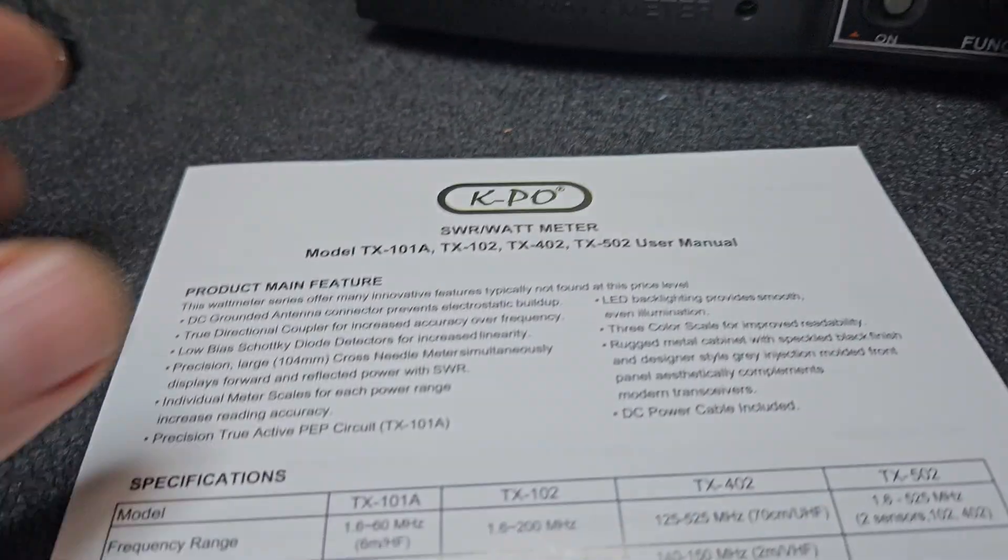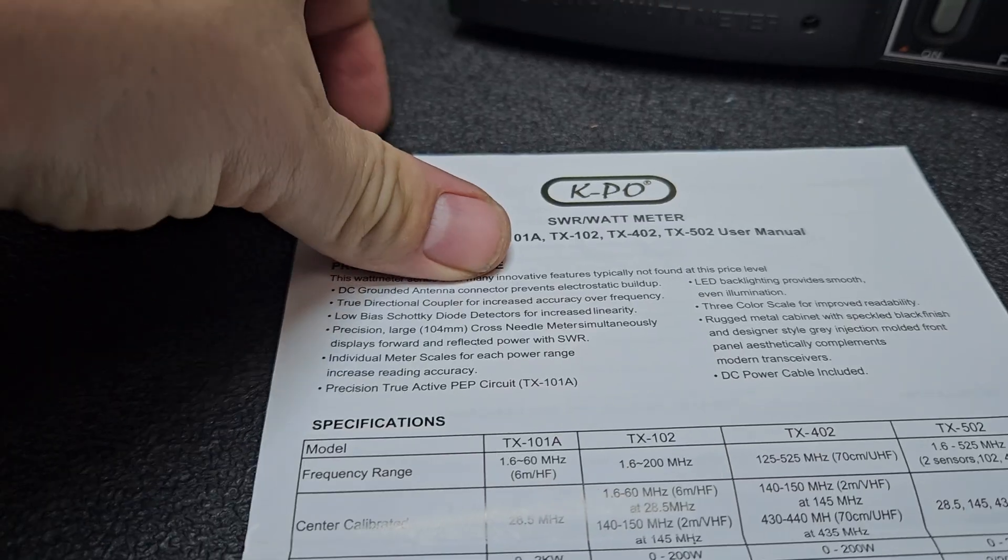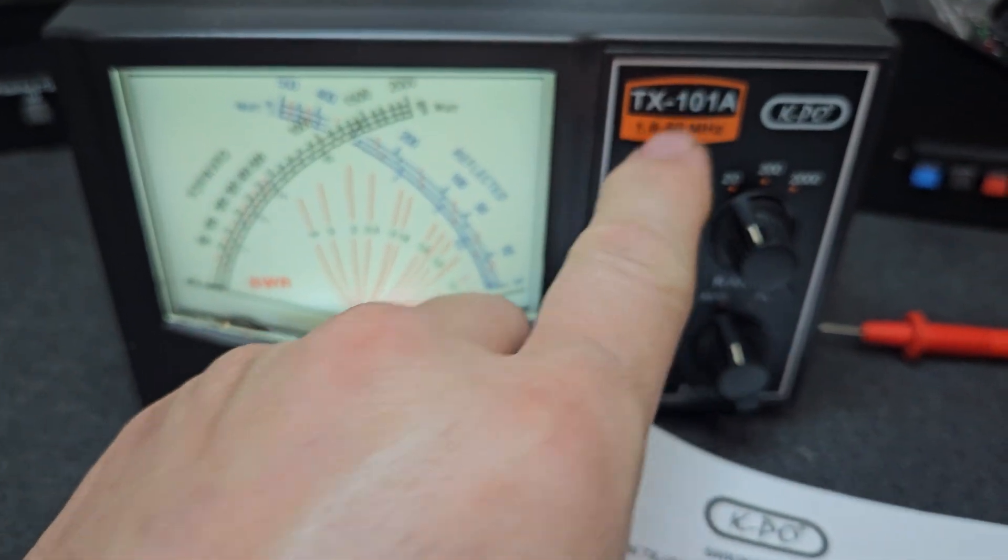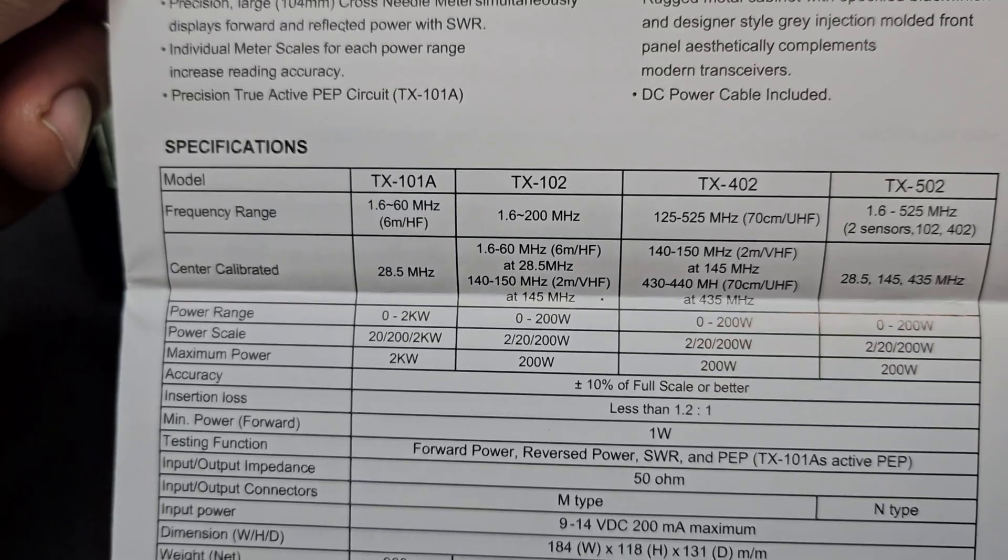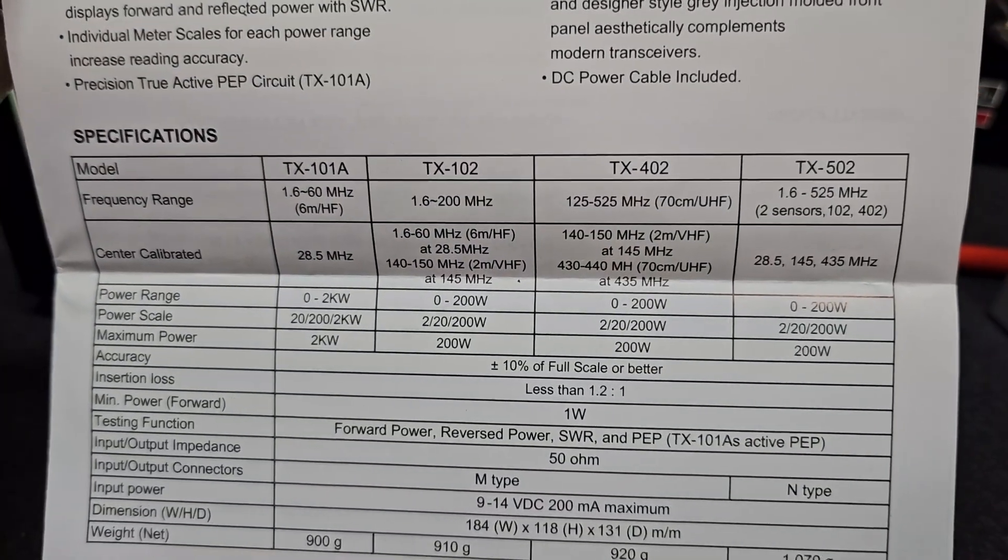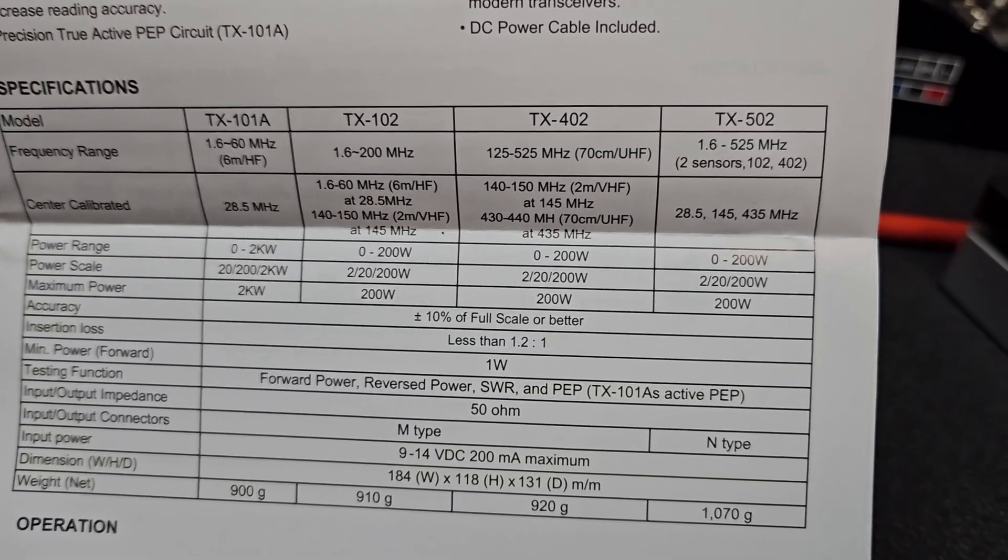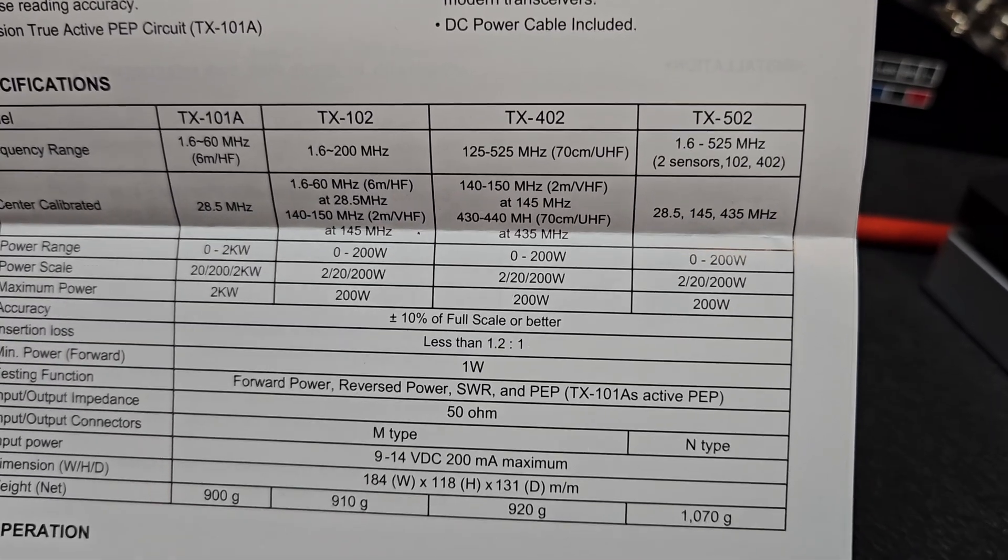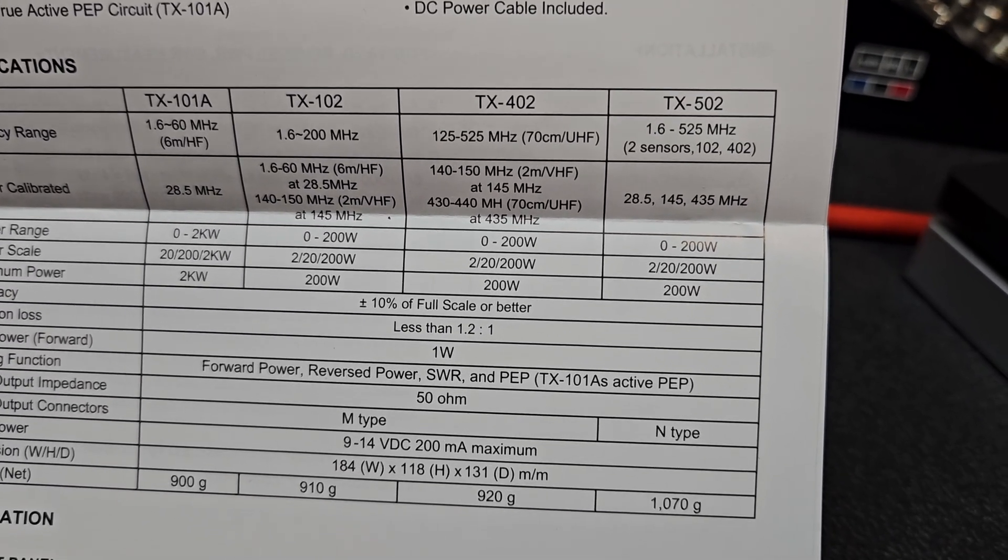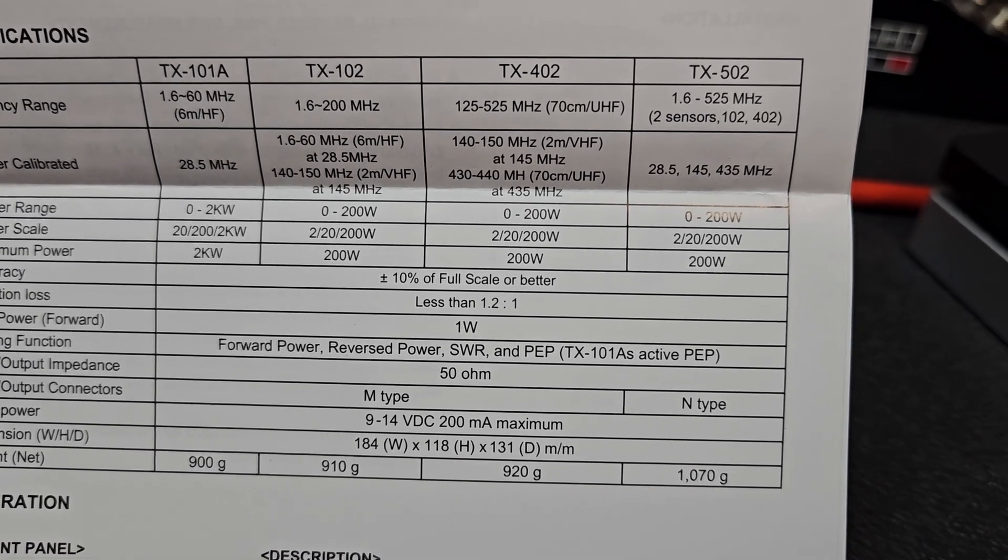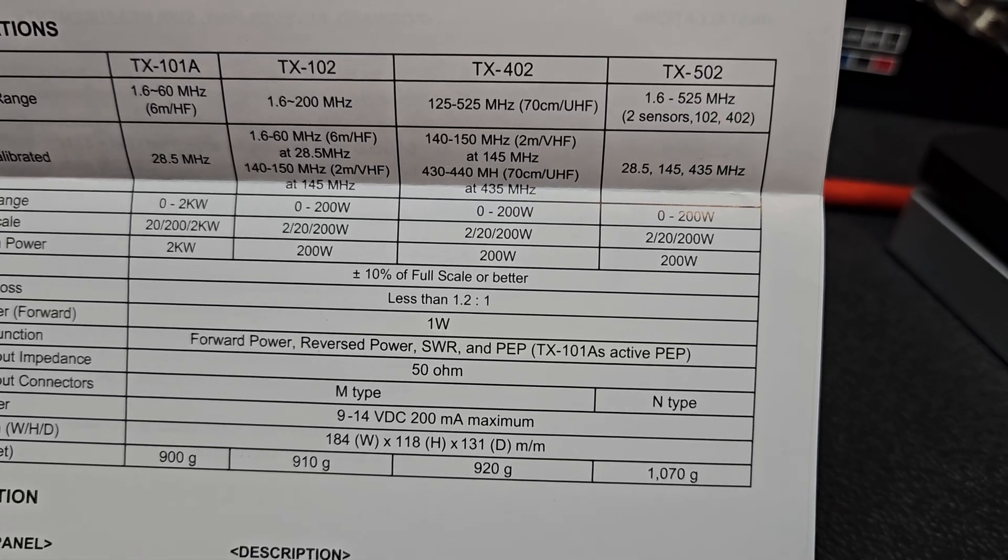I'll show the other models and what they're offering. They all have this look but have different color descriptions for different models. Some have lower power handling for your VHF and UHF. The good thing about the 1.6 to 525 megahertz model is it also has N-type connectors for your upper frequencies.